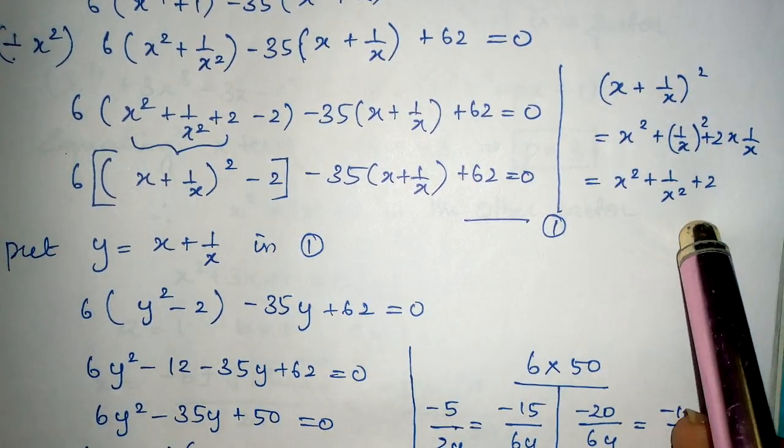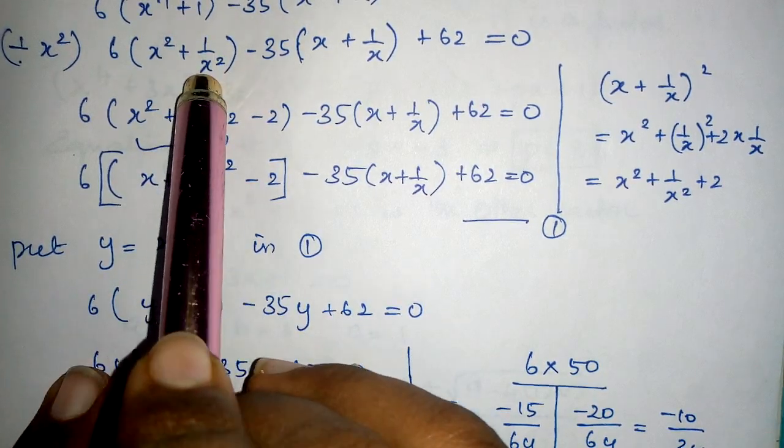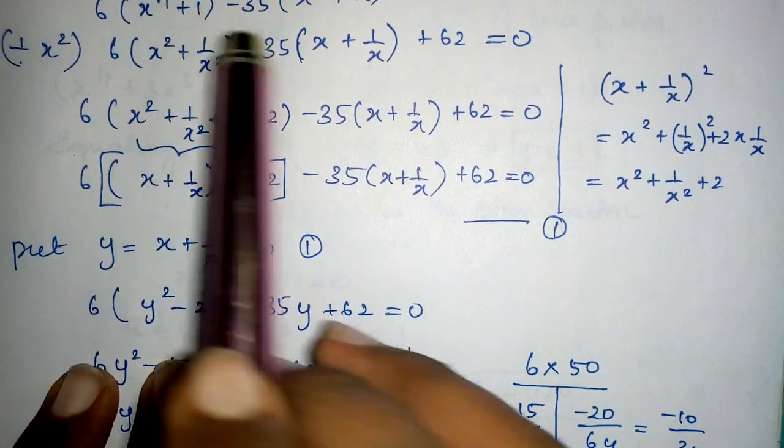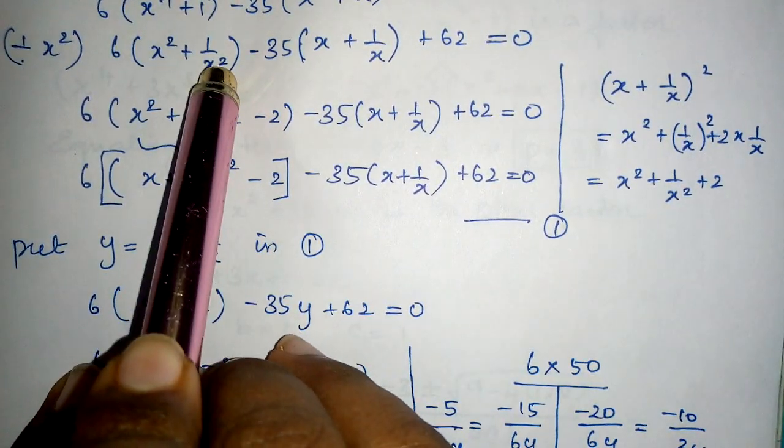Now check here. Here I have x² + 1/x². But if there exists a 2, I can simply write (x + 1/x)². So I need a 2 here. Can you understand?